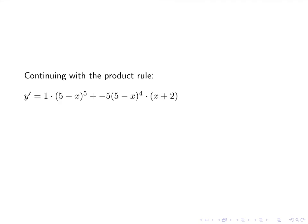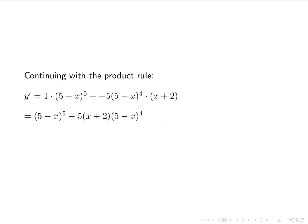Continuing with the product rule, we have 1 — u prime — times (5 minus x) to the 5th — v — plus negative 5 times (5 minus x) to the 4th — v prime — times (x plus 2) — u. Cleaning that up: we get rid of the 1 and change plus a negative to minus. I could distribute the 5 into (x plus 2), but there's really no point, so we leave it as is. I want you to read through the book and try out some of the problems, and let me know if you have any questions. Thanks.